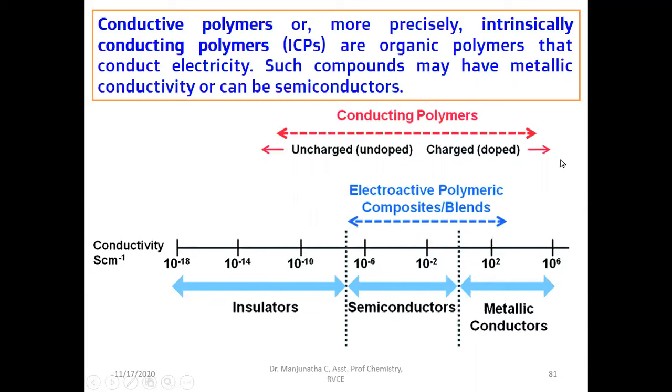There are polymers which are found to be insulators if they are not doped or modified. Upon doping, upon charging, the insulating polymer becomes conducting and shows conductivity almost equal to metallic. They are called electroactive polymers and also called composite blends, polymeric composites and blends.